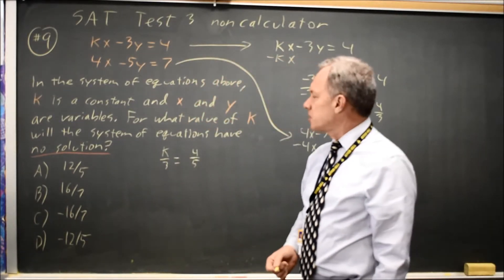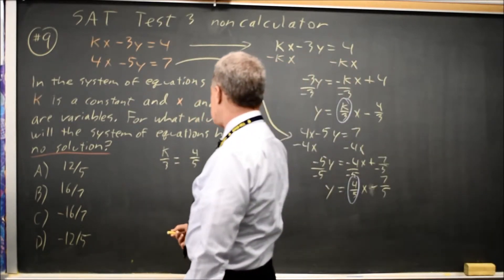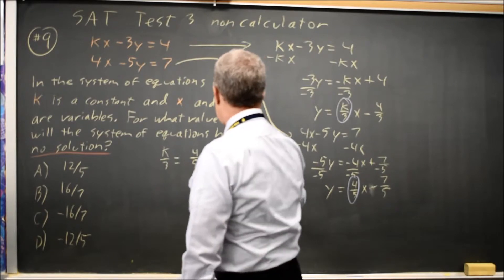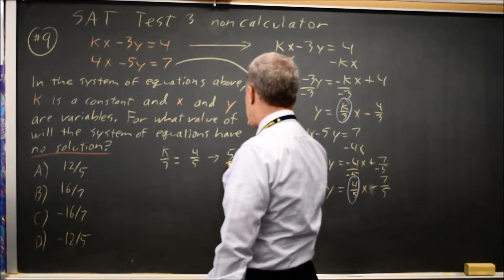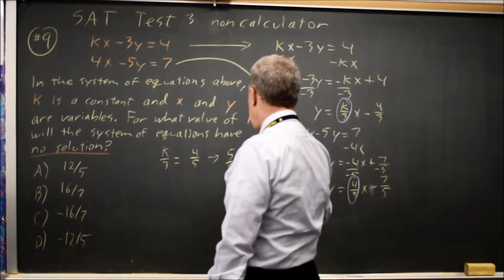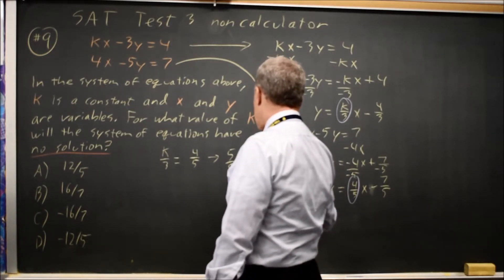That gives me 5k equals 4 times 3 is 12. Divide by 5. k equals 12 over 5.